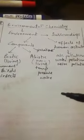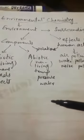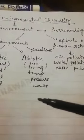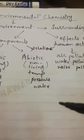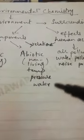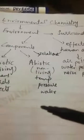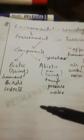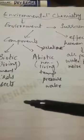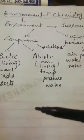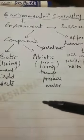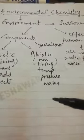The study of the environment — in which biotic and abiotic factors in relation with human activities affect our surroundings and result in different types of diseases in living organisms — is collectively called environmental chemistry.